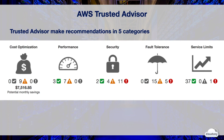Trusted Advisor highlights your AWS resources and recommends potential improvements. For example, it can tell you things that could potentially waste or save your money, such as low utilization of EC2 instances, idle load balancers, unassociated EIPs, and whether you should leverage reserved instances.